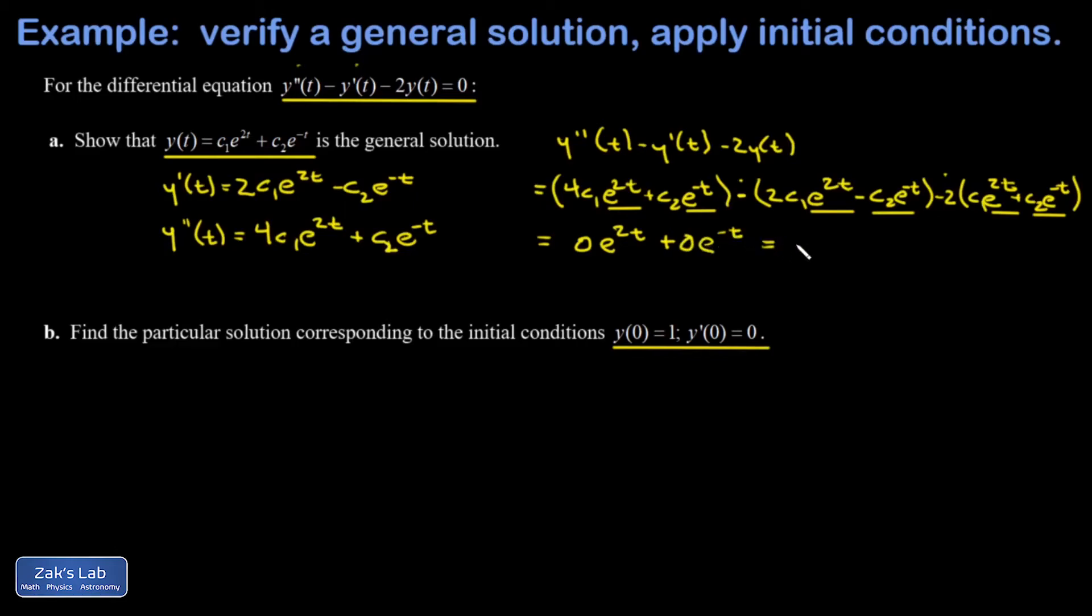So that also adds up to zero, and I end up with a grand total of zero. So in this little proof I've started with my original differential equation y''(t) - y'(t) - 2y(t), and then I went through the algebra and I showed that it's all zero. So this proves that that solution satisfies the original differential equation.